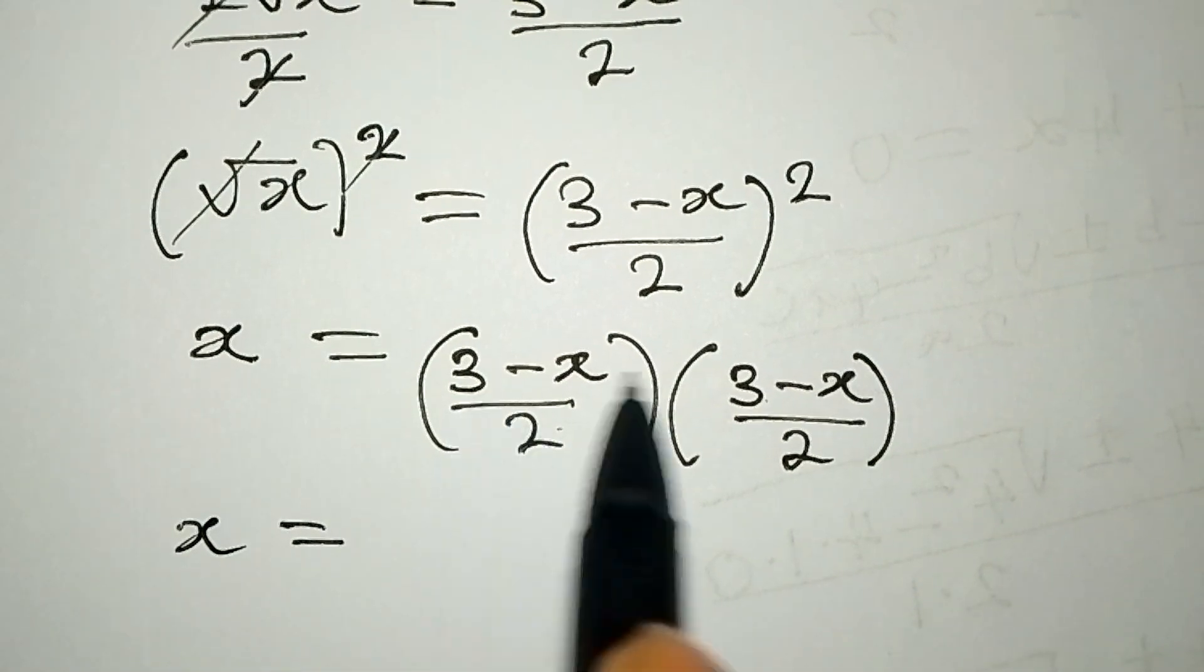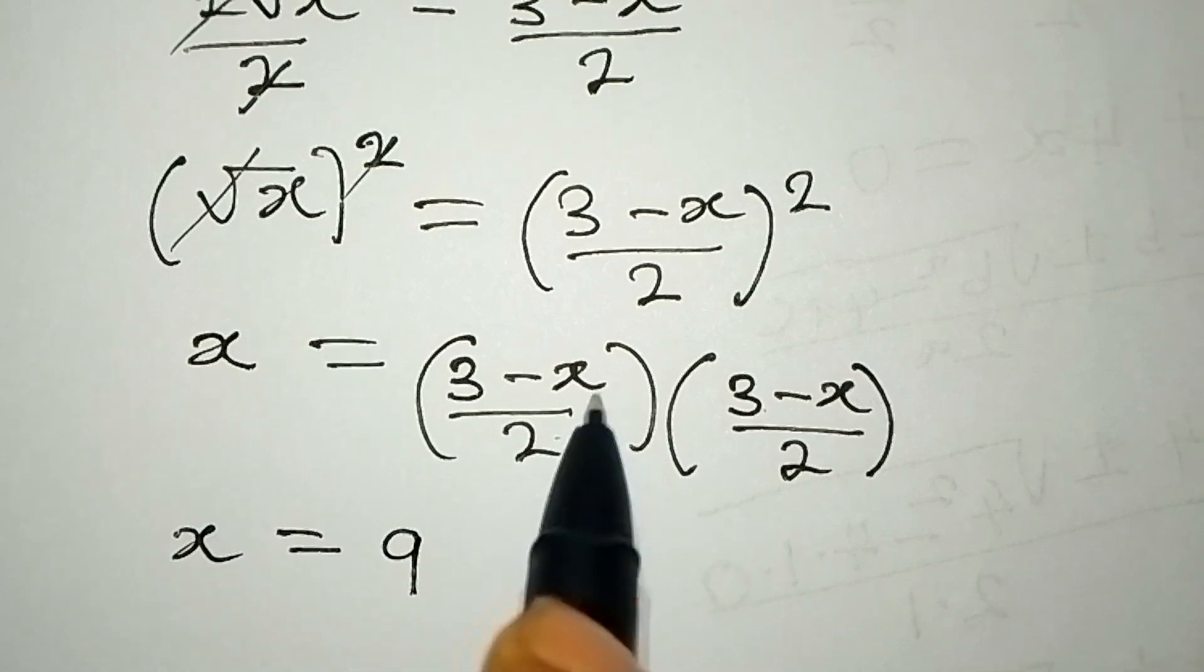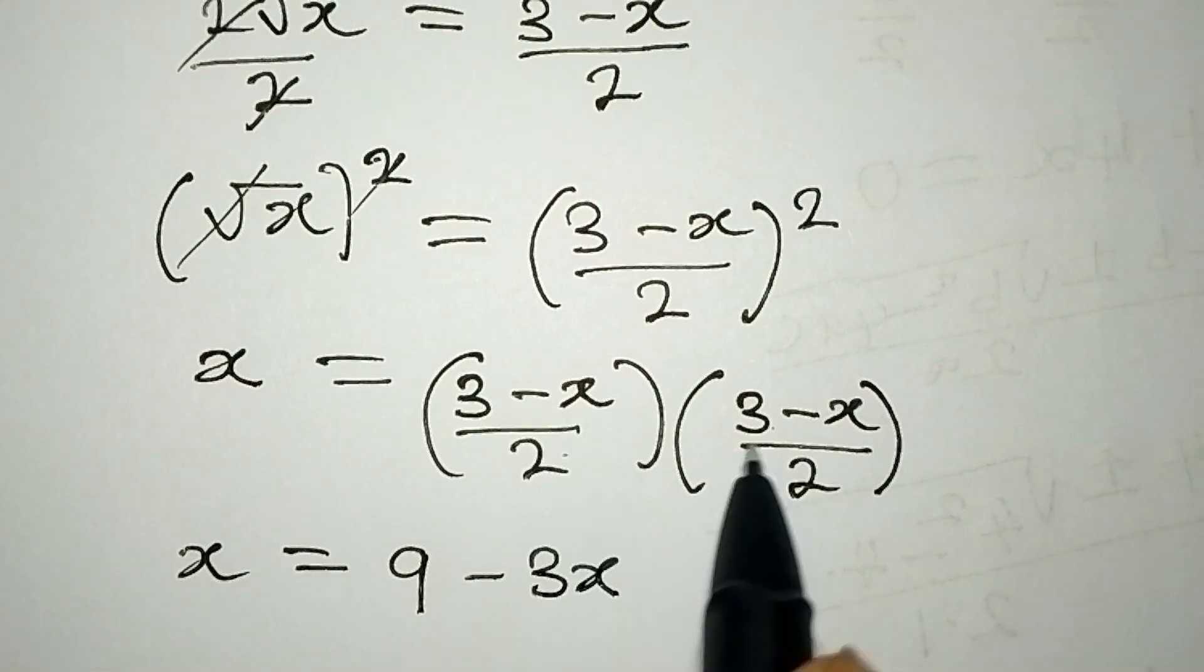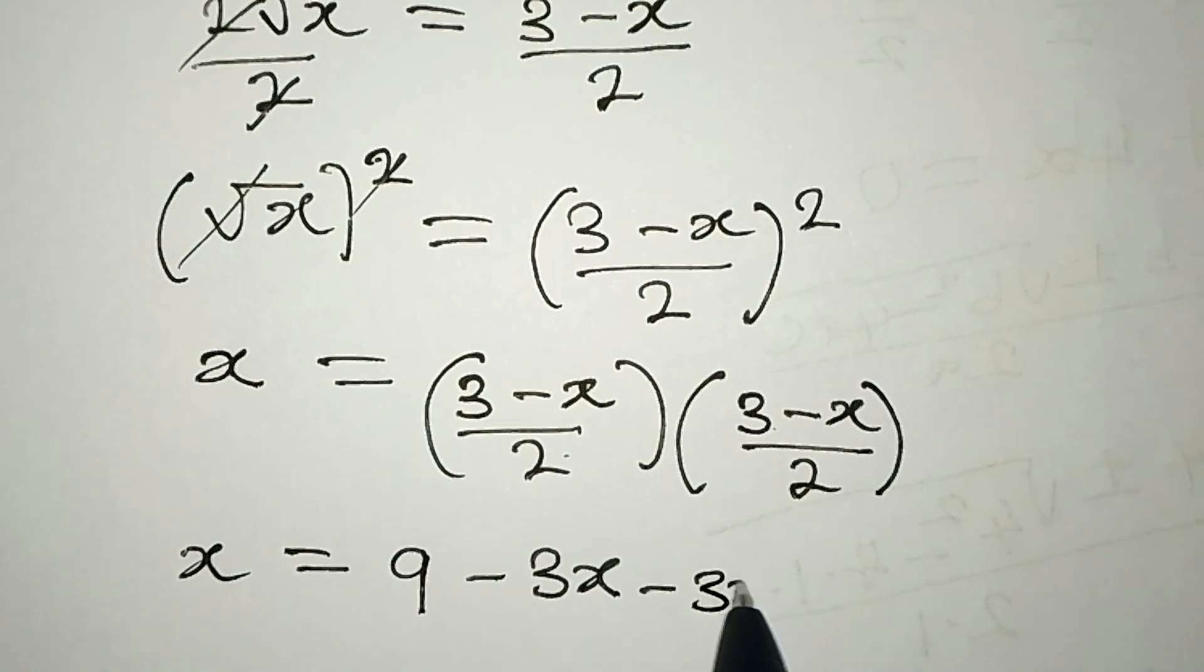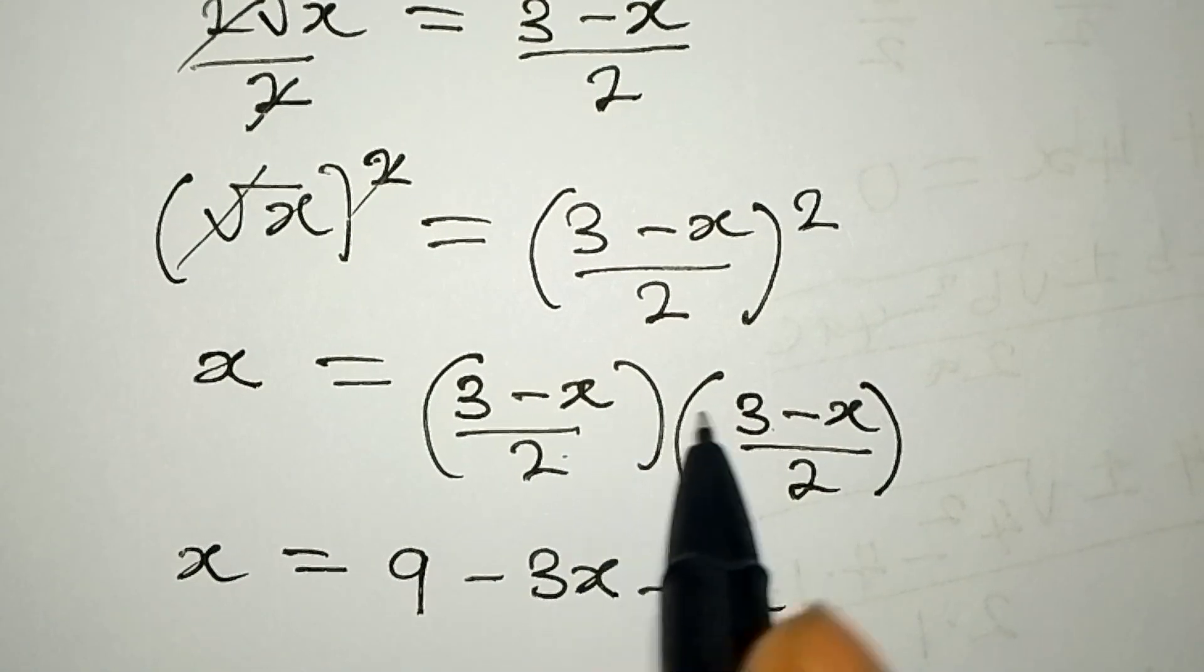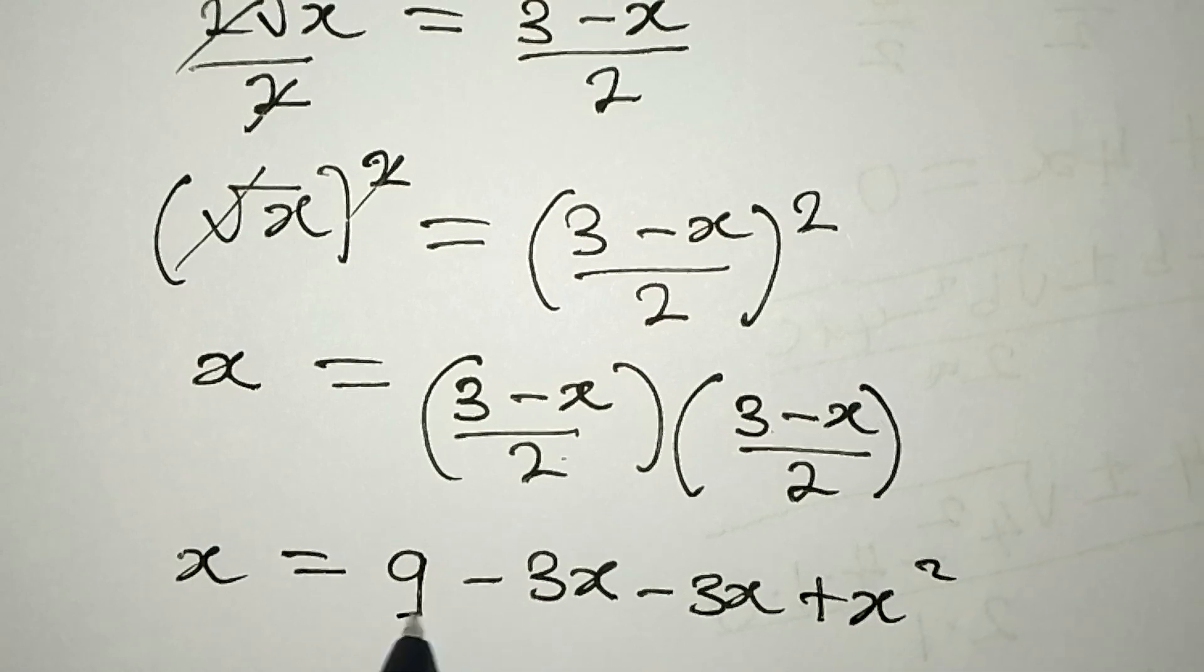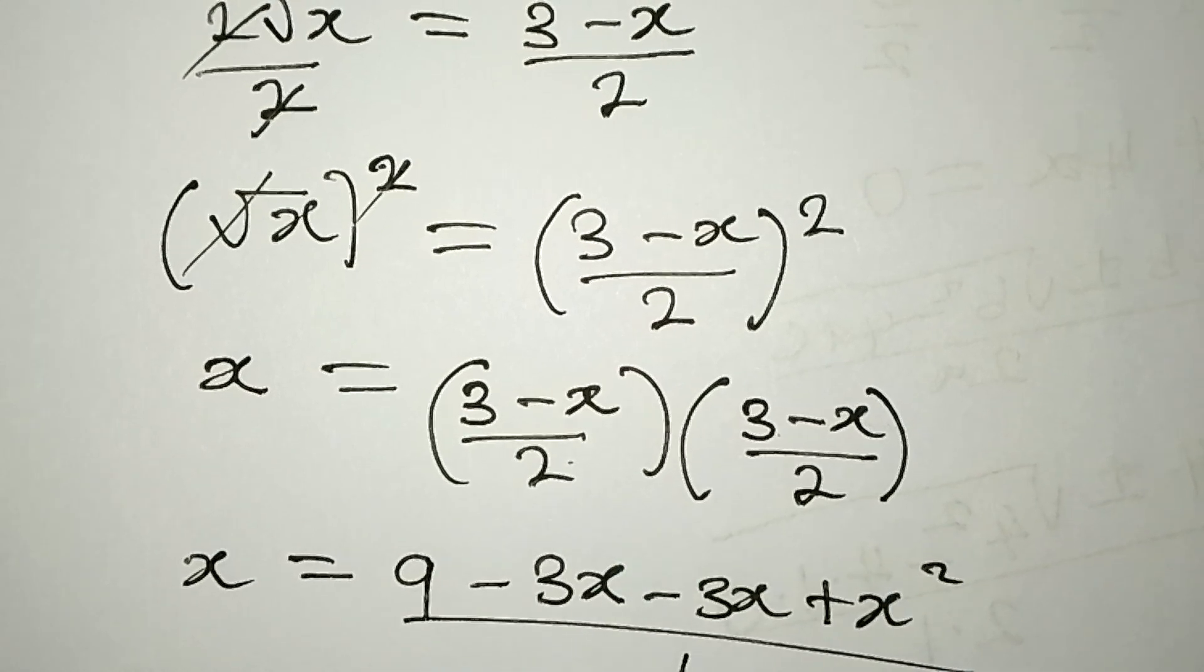x = (9 - 3x - 3x + x²)/4. That's 3 × 3 = 9, then 3 × (-x) = -3x, then (-x) × 3 = -3x, then (-x) × (-x) = +x², all over 4.